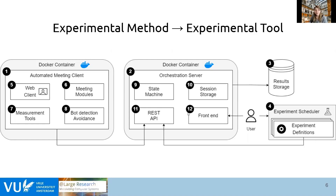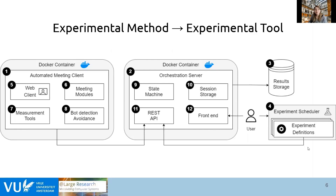The orchestration server keeps track of the state of all the various clients in the meeting. Also, the orchestration server provides a front end where the researcher can define the settings of the experiments, such as the number of users in a meeting and which video conferencing system to use. For example, if the researcher defines an experiment with six clients, the orchestration server waits for six clients to join the experiment. The clients then start measuring system metrics, and at the end communicate these results to the orchestration server, which saves them in a database. It is also possible to run multiple experiments in a row using the experimental scheduler.